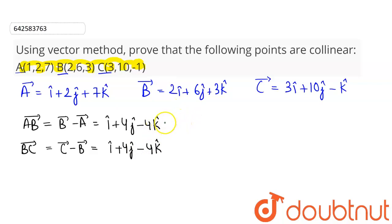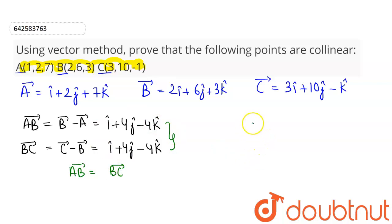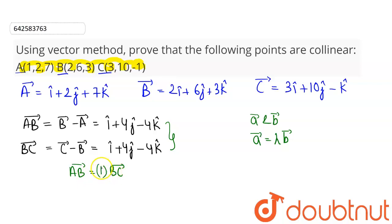From both these results, you can see that AB vector equals BC vector. Two vectors A and B are said to be parallel if A vector can be written as lambda times B vector, where lambda is a scalar. Here AB vector equals 1 times BC vector, where lambda equals 1 is a scalar. So AB vector is parallel to BC vector.